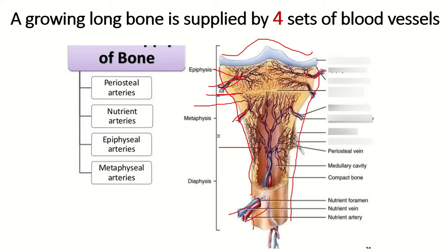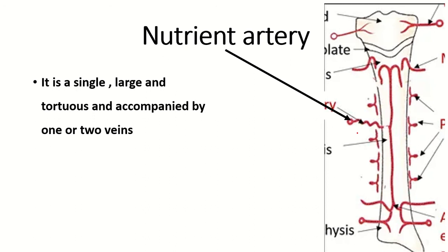One of the branches of the epiphyseal artery also enters within the metaphysis. So the metaphysis is supplied by branches of the nutrient artery, the metaphyseal artery, and branches arising from the epiphyseal artery. This makes the metaphysis the most vascular portion of the growing typical long bone. The nutrient artery is a single, large, tortuous vessel accompanied by one or two veins.